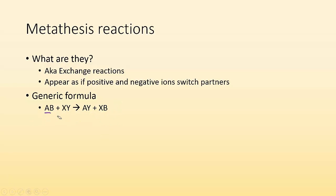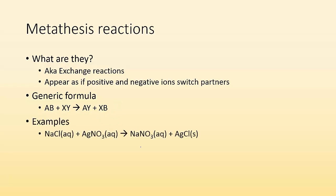So that's what these are. An example would be NaCl aqueous plus AgNO3 becoming NaNO3 and AgCl solid. You can see they switch partners — the Ag was with NO3, but Ag ended up with Cl. The Na was with Cl, and Na ended up with NO3.